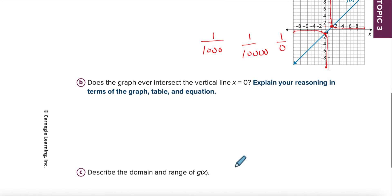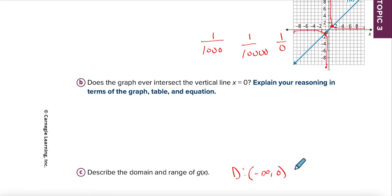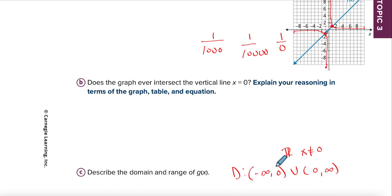Let's find the domain and range. The domain is all x values — all of them work except for zero. So I write it as an interval: from negative infinity to zero, and from zero to positive infinity. That means all real numbers work but x cannot be zero — if I included zero I would use brackets. The range is very similar: the only number I can't get for y is zero.